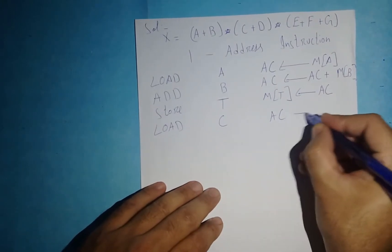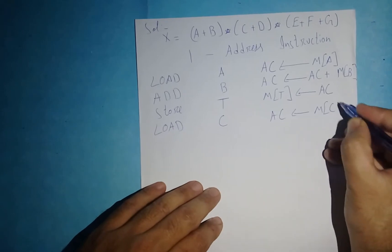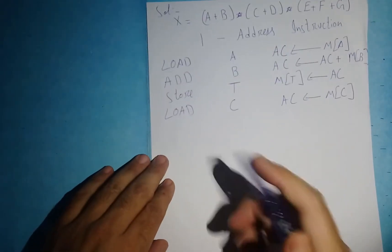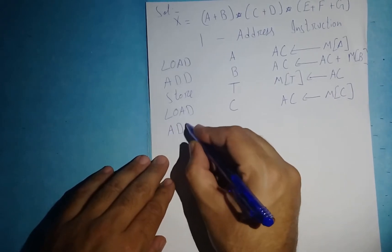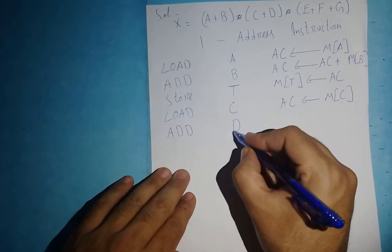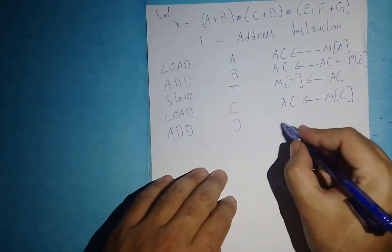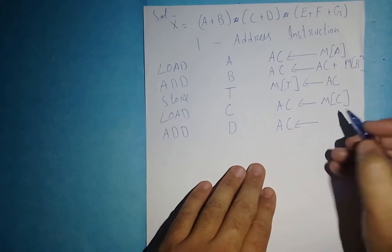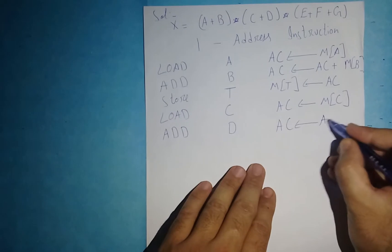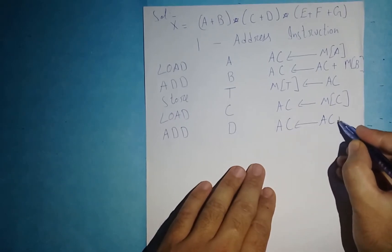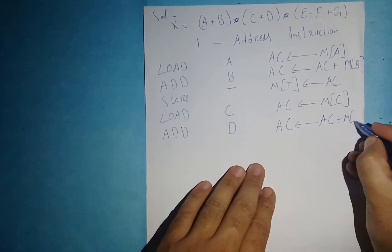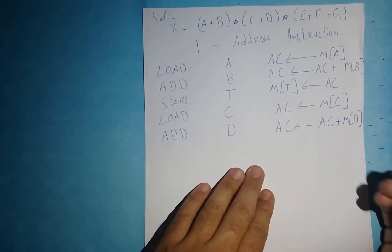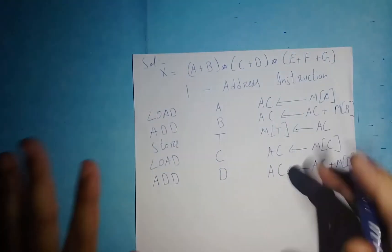Now in the register I get the value of variable c. Since c is going to be added with d, I write the operation ADD d. This AC, which had the value of c, is now added with variable d. So now this register has the answer of c plus d — the second bracket is solved.